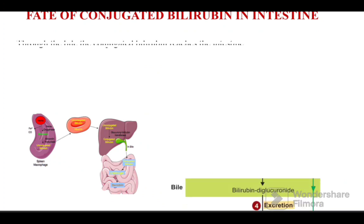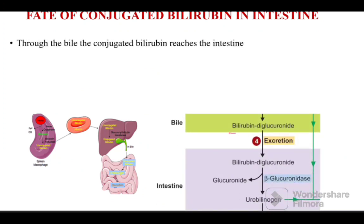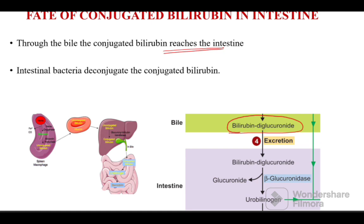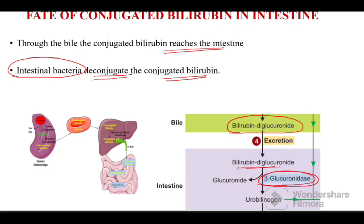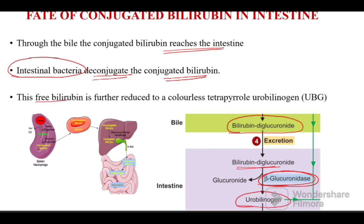Once it reaches the bile, bilirubin diglucuronide is excreted into the intestine. In the intestine, intestinal bacteria deconjugate this conjugated bilirubin via the enzyme beta-glucuronidase to form urobilinogen.